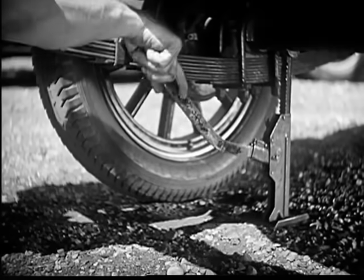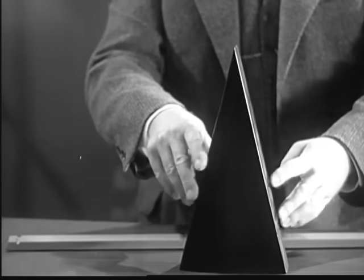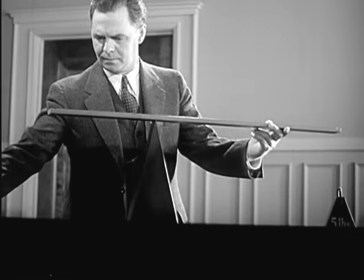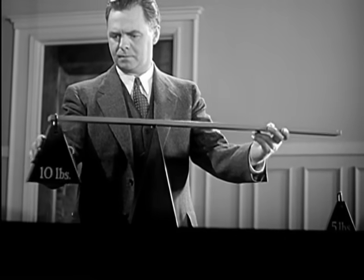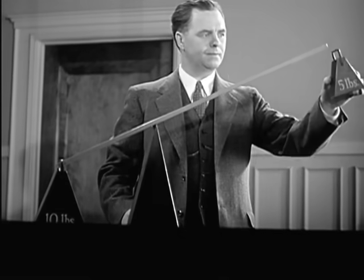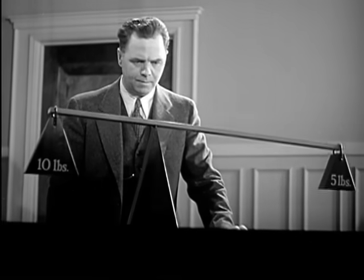Here's a place where a lever comes in mighty handy. Let's take the simplest kind of lever, a rigid bar working on a fixed support called a fulcrum. One end of this lever is twice as long as the other. Let's put a ten pound weight on this end and now we'll put half as much weight on this end. Five pounds balance ten.